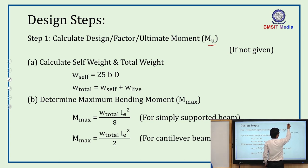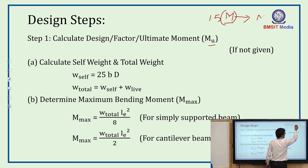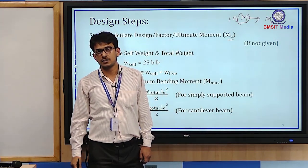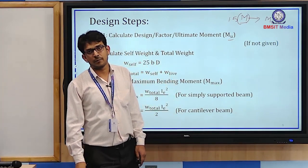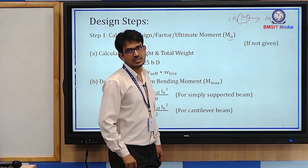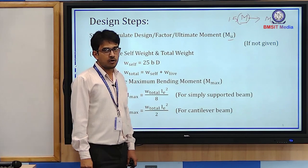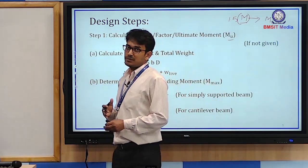If only the maximum bending moment is given, we multiply it by 1.5 to get the ultimate moment. If the ultimate moment is directly given, no need for this step. If only the moment M is given, we multiply by 1.5 to convert to ultimate moment. If load and span are given, we first calculate maximum bending moment then multiply by 1.5.